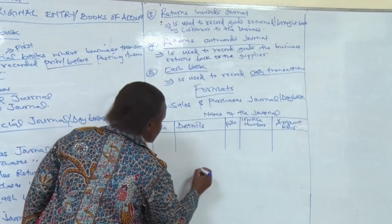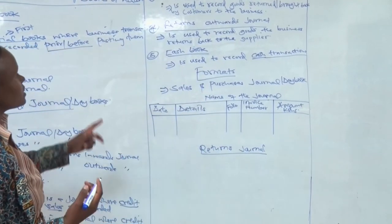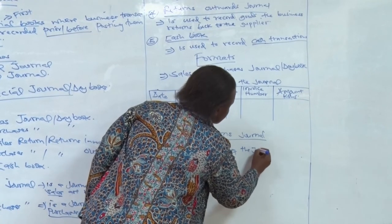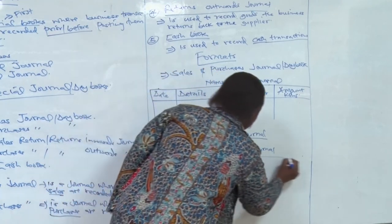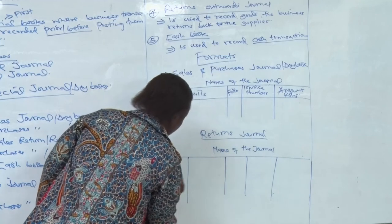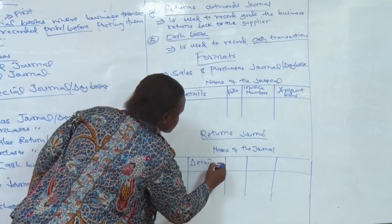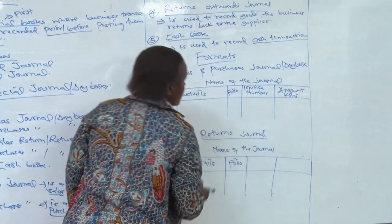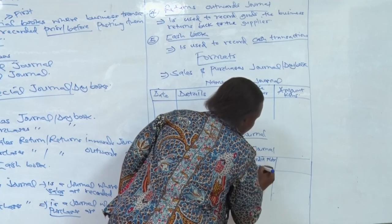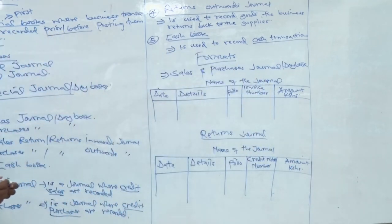The format of the returns journals — whether returns inwards or returns outwards — is similar. You start with the name of the journal as the title. First column: the date. Second column: the details. Then the folio. Then, instead of writing the invoice number, you write the credit note number. Then the amount. That is the format for the returns day books.